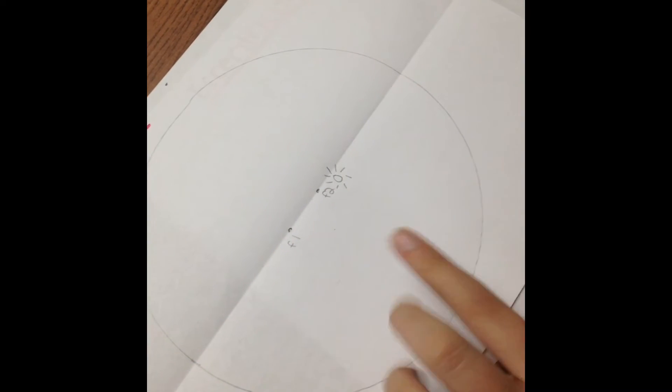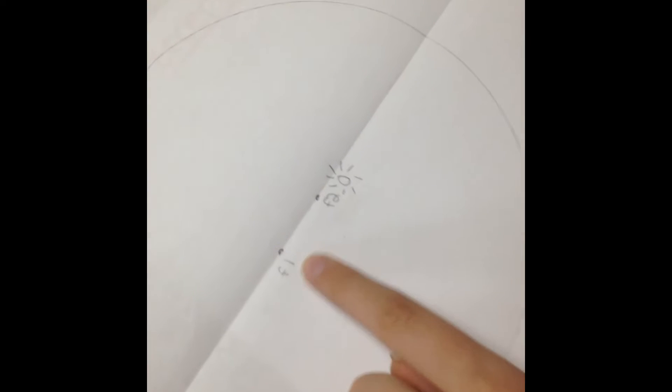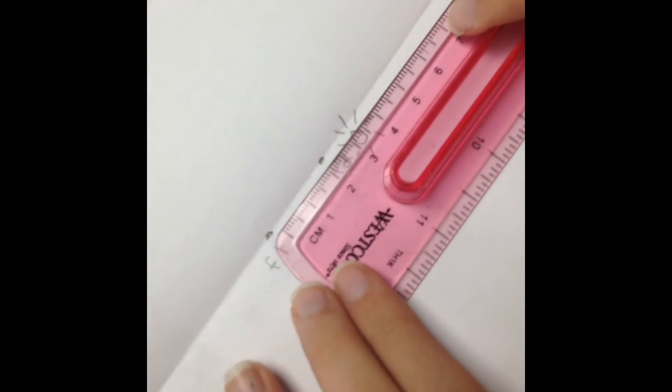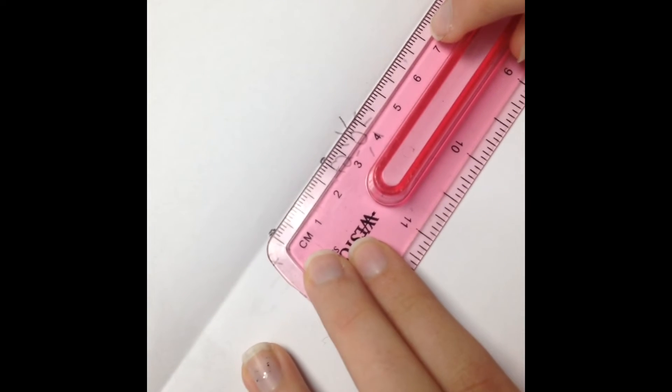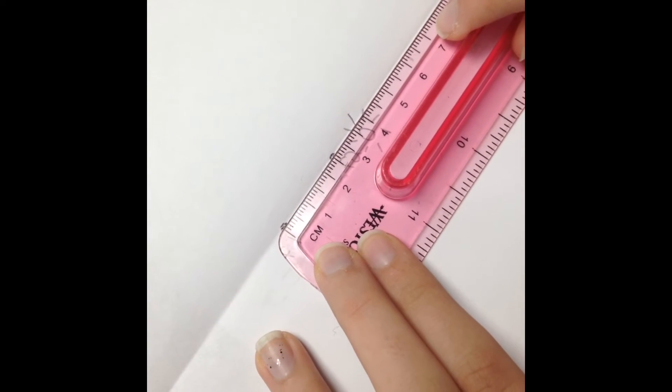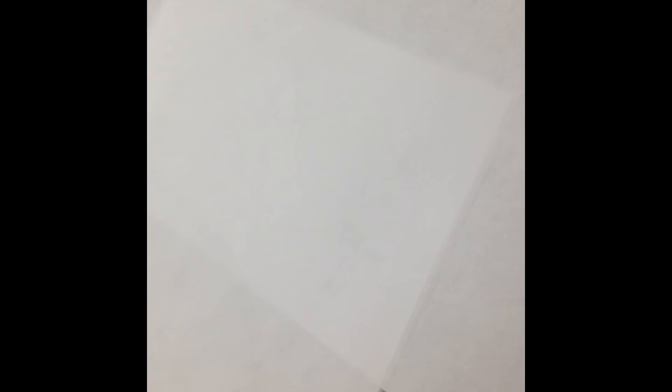Now that you understand the formula for eccentricity let's apply it to our ellipse. The distance, like I said before, is going to be between the two foci. Like it should be, the distance between the foci is 2.5 centimeters.